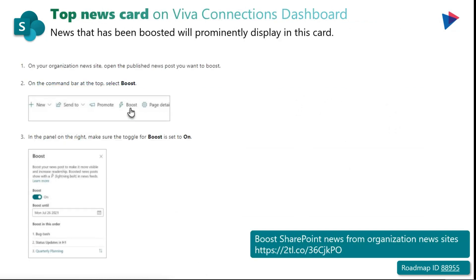Next up, you now have the possibility to see important boosted news and announcements on the Viva Connections dashboard. Authors can use the boost feature to highlight important announcements to employees. The top news card is now available for private preview customers and will become generally available to all customers in the first quarter of 2022.